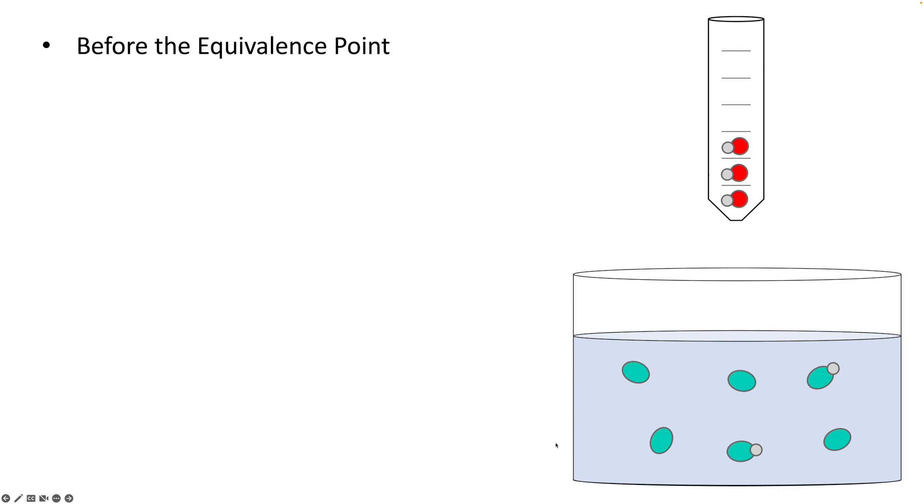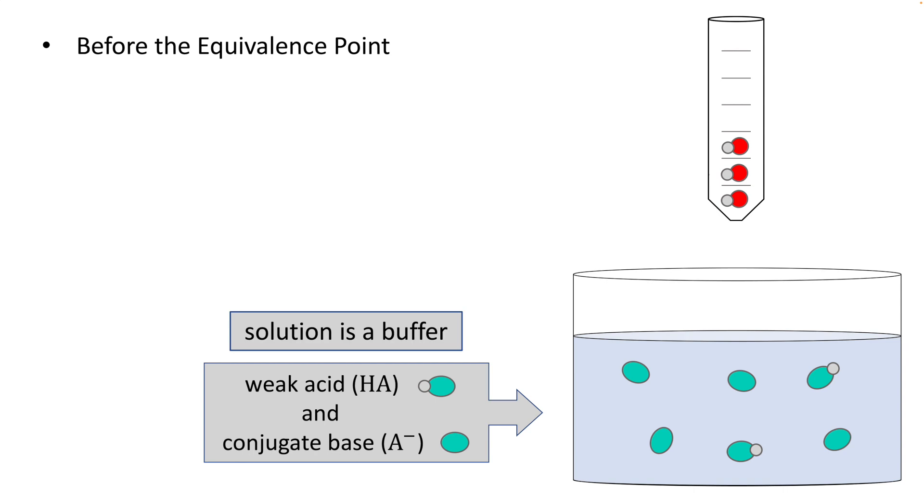Now we look at what we have in solution. What we have in solution is two HA's that haven't reacted, four A minuses that have been formed. So we have a weak acid and its conjugate base. That's a buffer, once again, because the concentrations are fairly similar to each other and significant. We can once again determine the pH at this point of the titration using the Henderson-Hasselbalch equation if we get our HA and A minus concentrations, which we can determine from the amounts left after reaction.